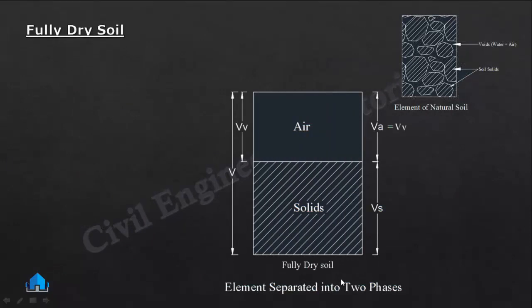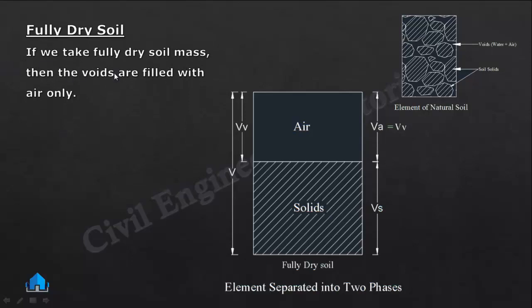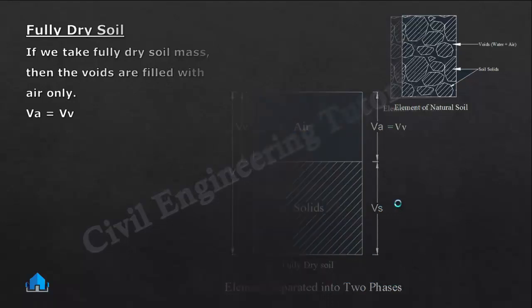If we take dry soil mass, then the voids are filled with air only. So volume of air equals volume of void. This is volume of solid, and this is total volume V. The voids are completely filled with air, so Va equals Vv. This is fully dry soil — the element is separated into two phases: solid and air.